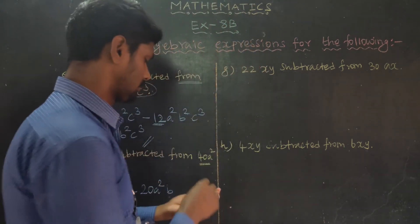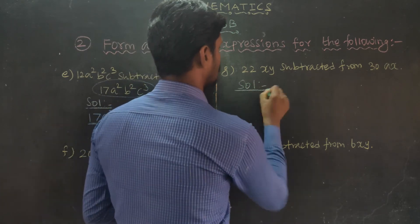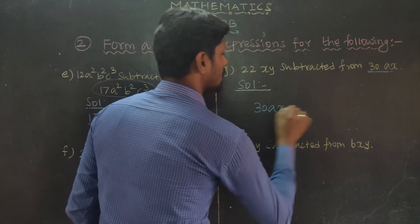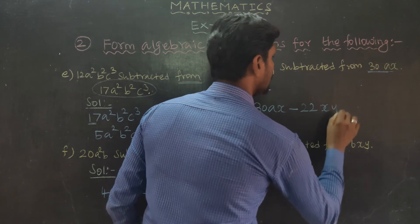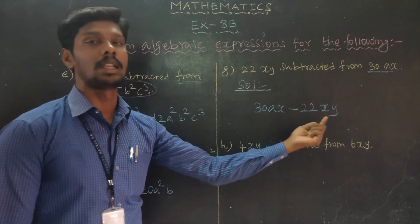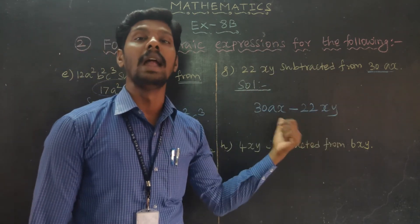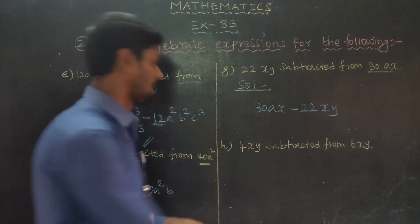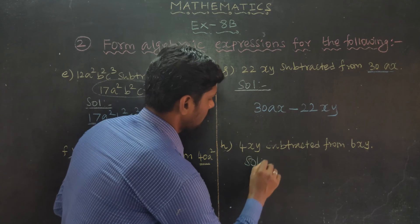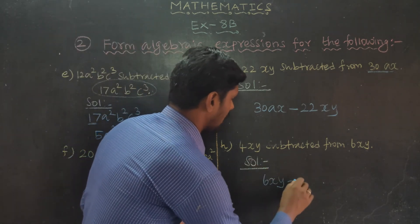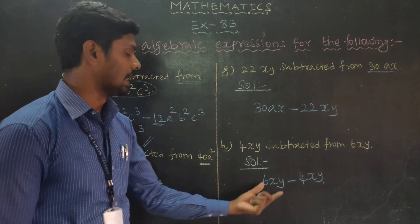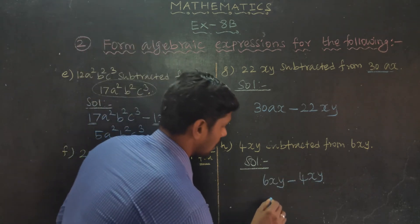Part G: some x y subtracted from 30 a x, giving 30 ax minus 22 xy. Simplifying: 6 xy minus 4 xy equals 2 xy.